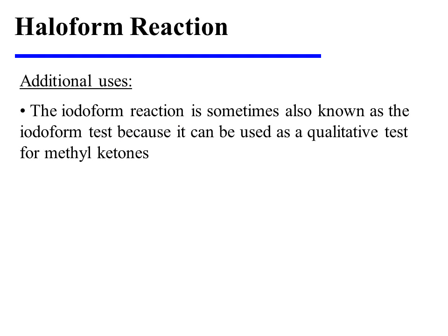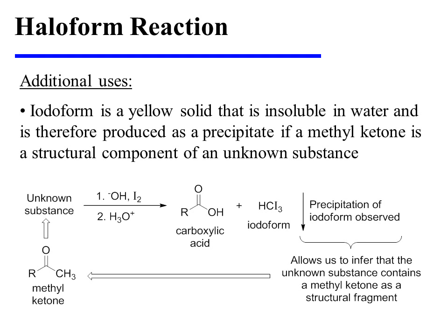The iodoform reaction is sometimes also known as the iodoform test, because it can be used as a qualitative test for methyl ketones. Iodoform is a yellow solid that is insoluble in water and is therefore produced as a precipitate if a methyl ketone is a structural component of an unknown substance. In other words, we can expose an unknown substance to the iodoform reaction. If iodoform is produced, it will be observed as a precipitate, and that will allow us to infer that the unknown substance did indeed contain a methyl ketone as a structural fragment.